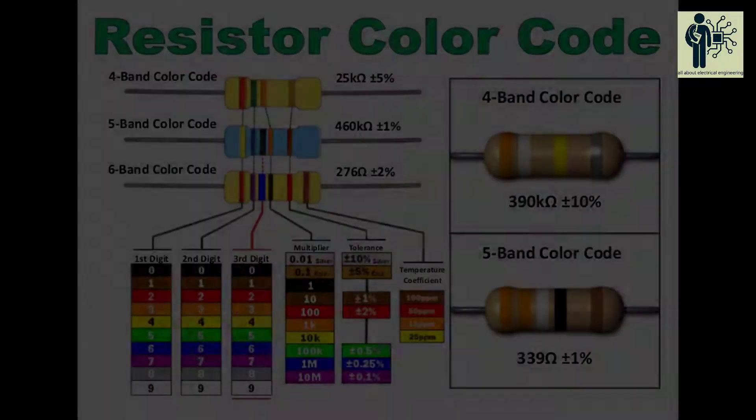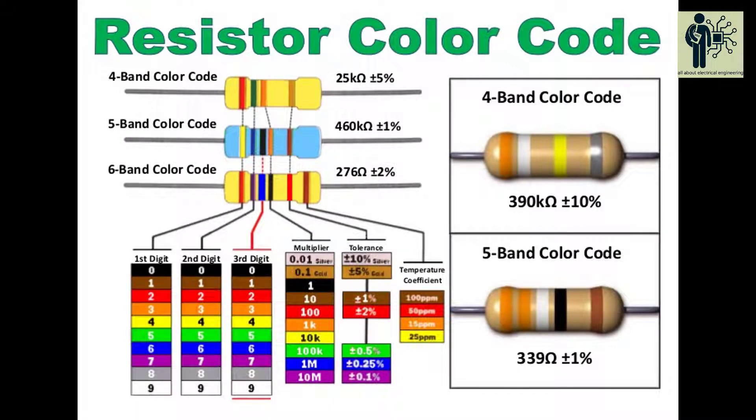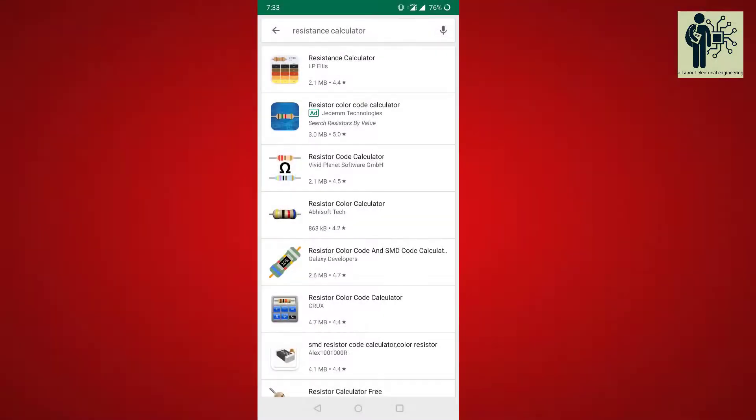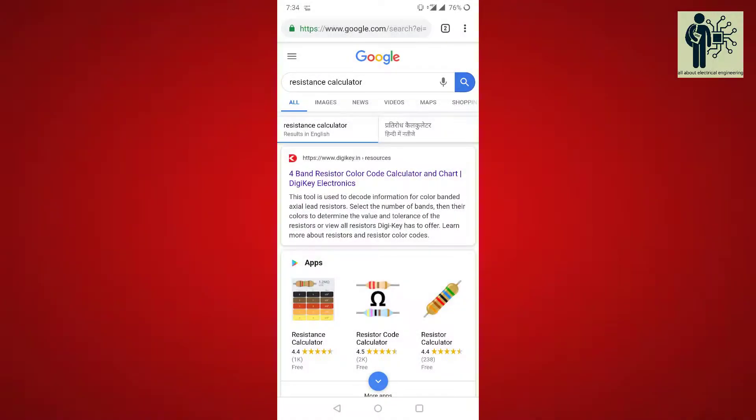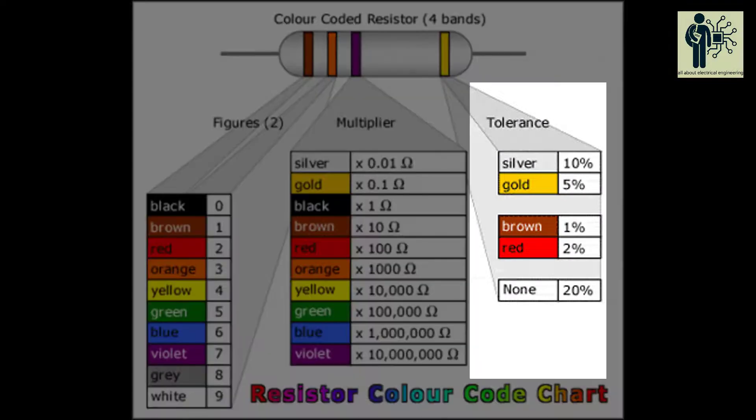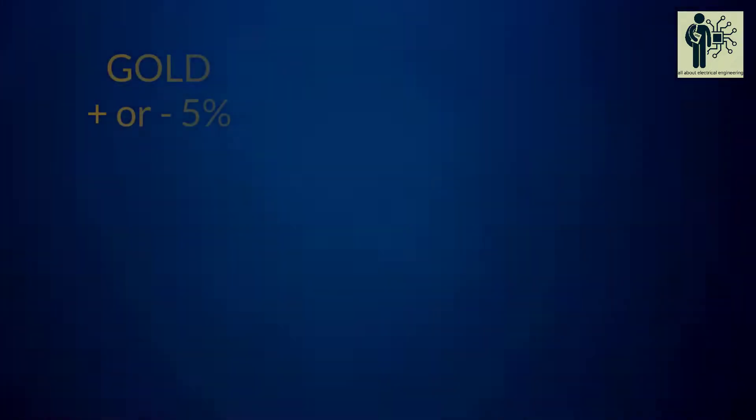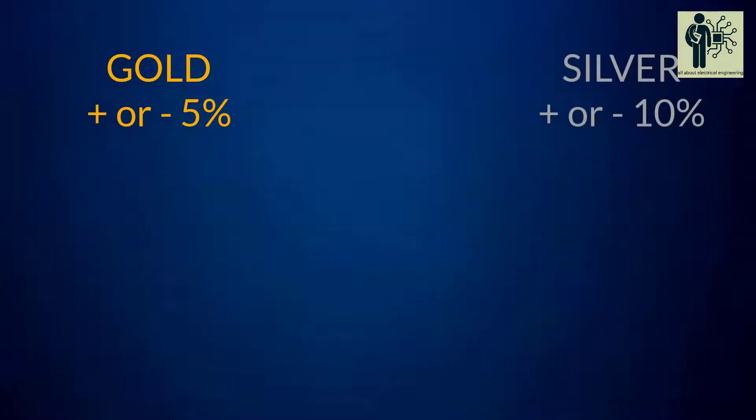If you want to calculate the resistance of a color code resistor, then you have to follow the chart or use any resistor calculator present in app store or at Google. The last color in a color code resistor indicates tolerance of the resistor: gold ±5%, silver ±10%, no color ±20%.